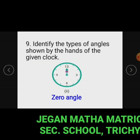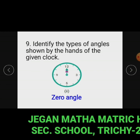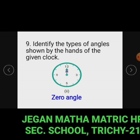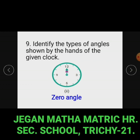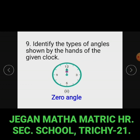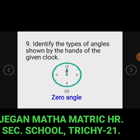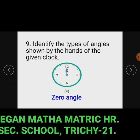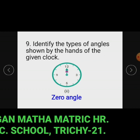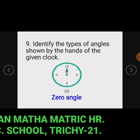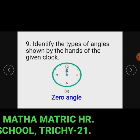Subdivision 2: The hands of the given clock show a zero angle. When two rays or lines coincide, they are said to make an angle of zero. So in this figure the hands of the given clock show a zero angle.